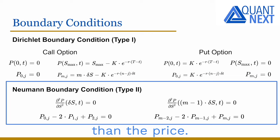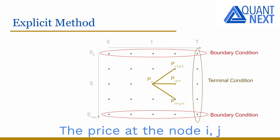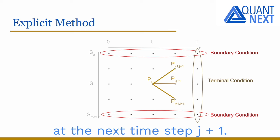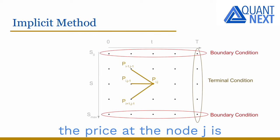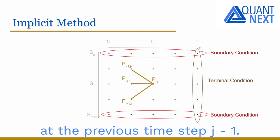We will develop in other videos the three main kinds of finite difference methods. The explicit method, which goes backward: the price at node (i, j) is estimated from the three prices at the next time step j+1. The implicit method, which goes forward: the price at node (i, j) is estimated from the three prices at the previous time step j-1. And the Crank-Nicholson method, which is an average of the forward and backward methods.